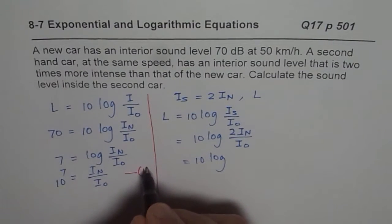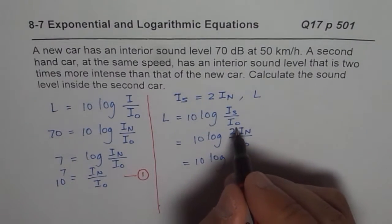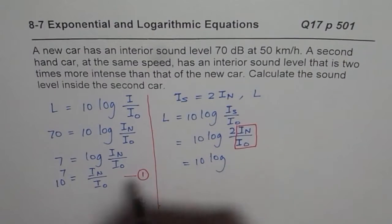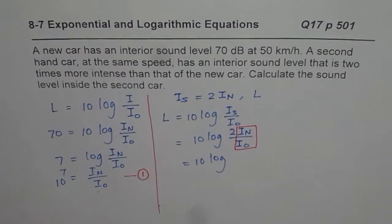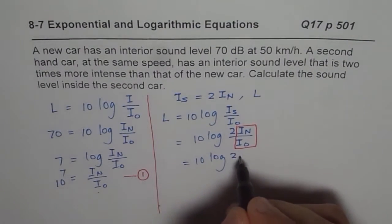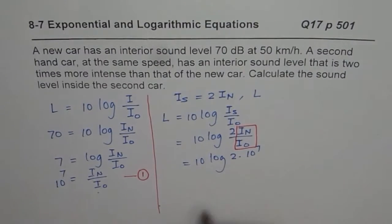Now that gives us two times. We already know IN over I0 is 10 to the power of 7, so this is known to us. We will substitute this value from here. So what do we get? We get two times 10 to the power of 7.